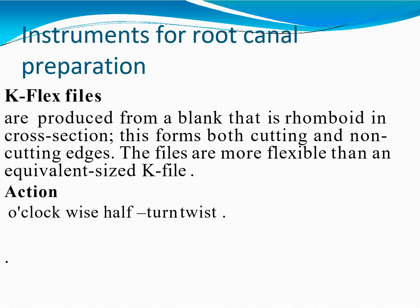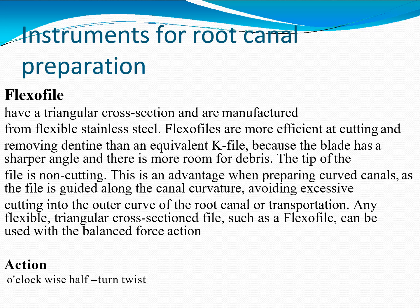K Flex files are produced from a blank with a rhomboidal cross-section, forming both cutting and non-cutting edges. They are more flexible than an equivalent size K file; action is a clockwise half-turn twist. Flexo files have a triangular cross-section and are manufactured from flexible stainless steel. They are more efficient at cutting and removing dentine than an equivalent K file because the blade has a sharper angle and there is more room for debris. The tip is non-cutting, which is an advantage when preparing curved canals, guiding the file along the canal curvature and avoiding transportation.